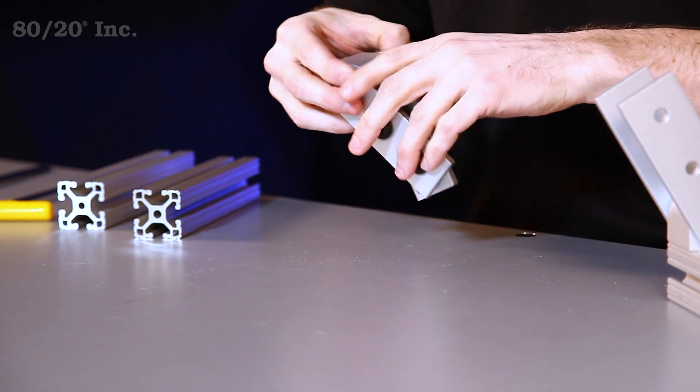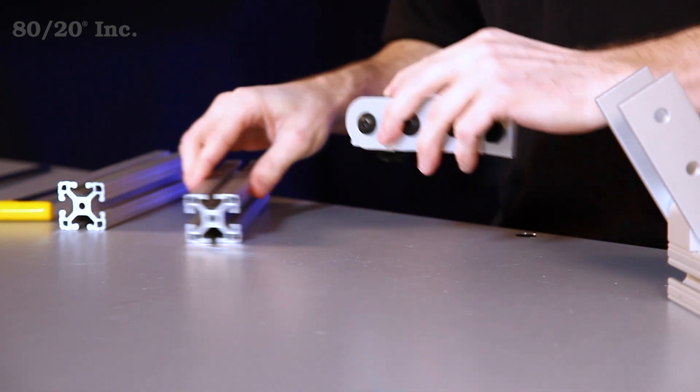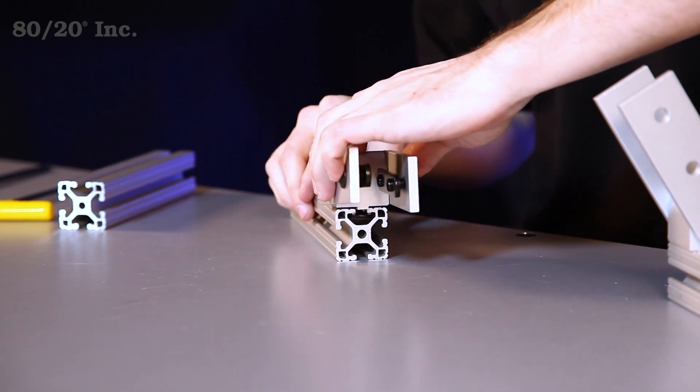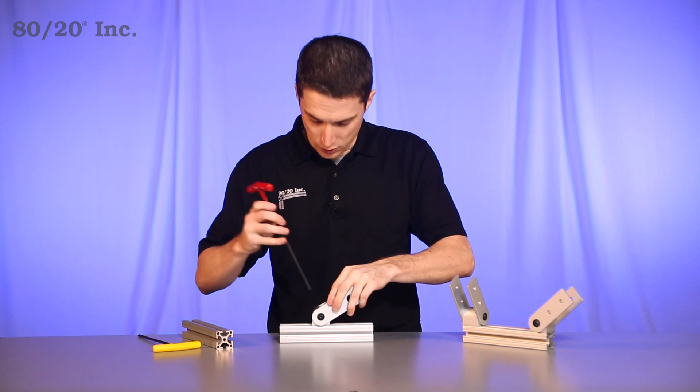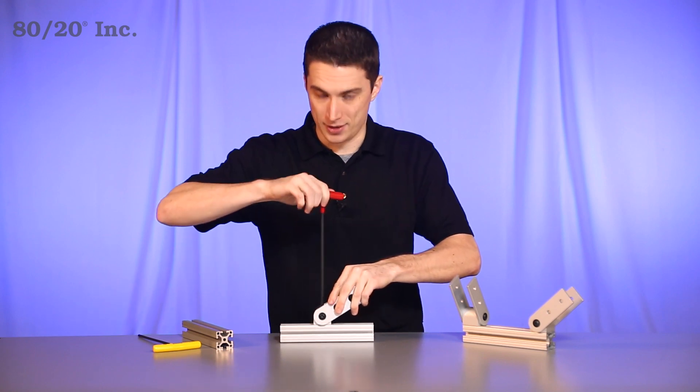Once we have that ready to go, we'll take our first bar and slide the Pivot Nub right onto it. Once we've found our location, we'll take a wrench and tighten that into place.